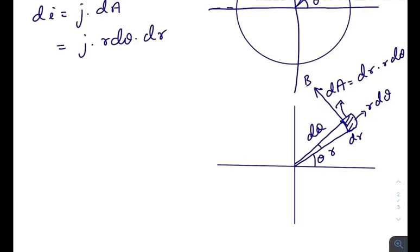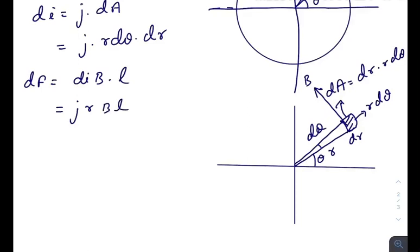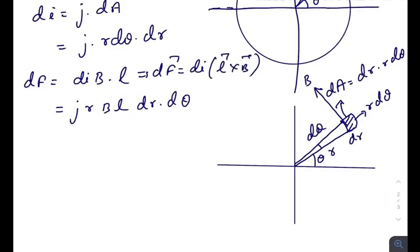Due to that magnetic field, there is a small force acting on this strip, and that force will be dI · B times a length l of that infinite wire. dI will be j · r · dr · dθ. In vector form the formula is dI · l cross B, and if you check the cross product of l and B it would be along a specific direction.